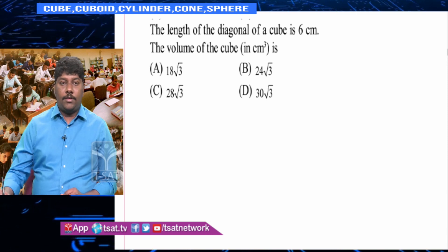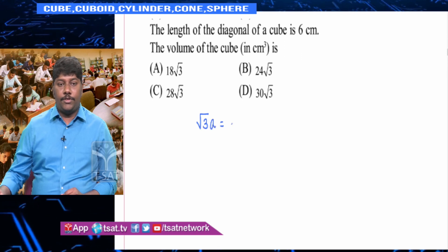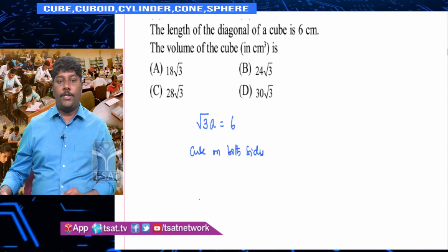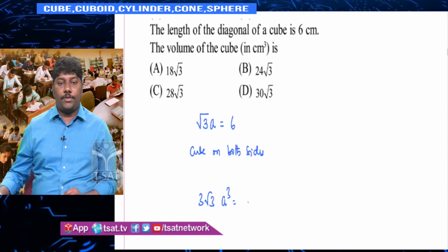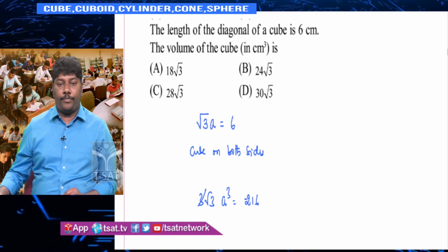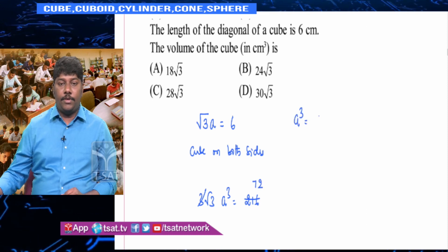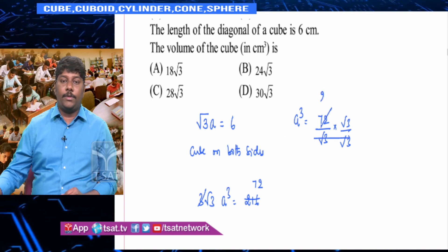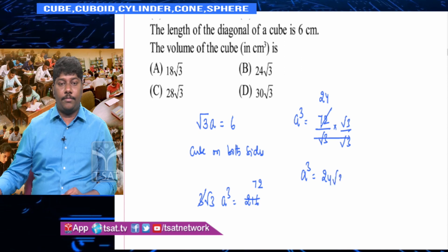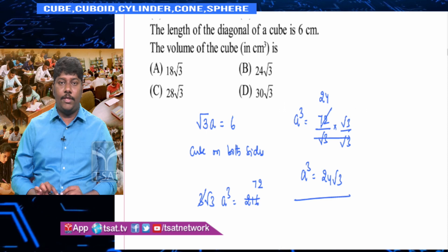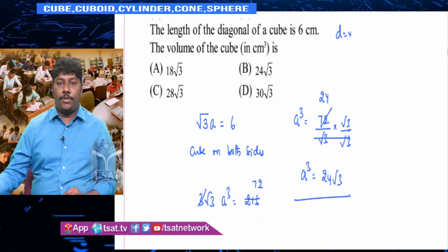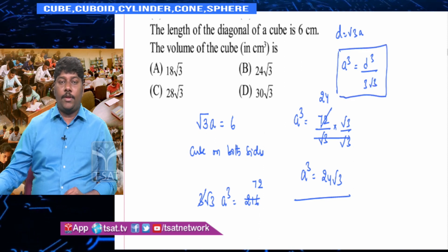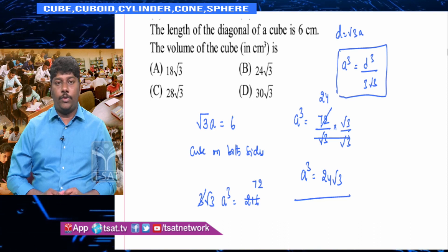The length of the diagonal of the cube is 6 cm. Find the volume. Diagonal = √3·a = 6. Cubing both sides: 3√3·a³ = 216. So a³ = 216/(3√3) = 72/√3. Rationalising: a³ = 24√3. The direct formula: volume = d³/(3√3). Volume of the cube is 24√3 cm³.